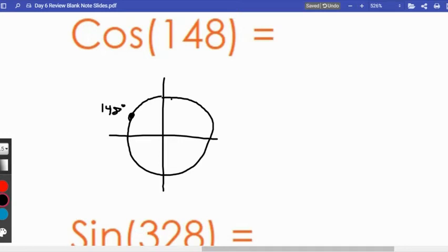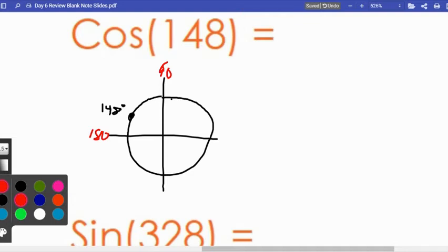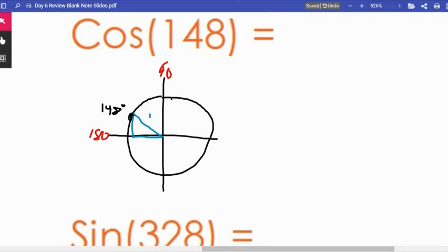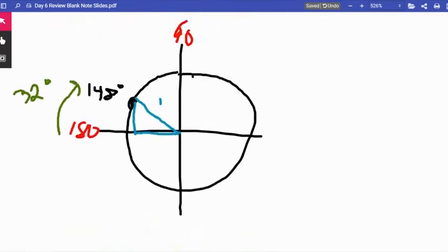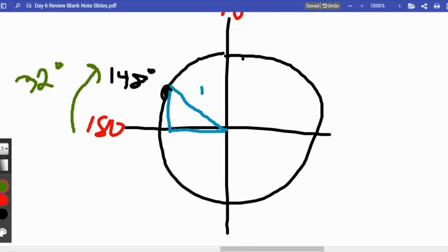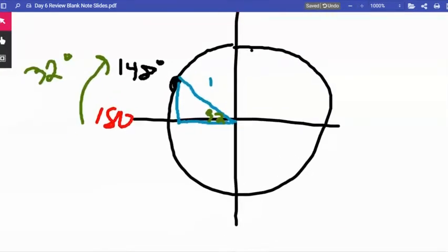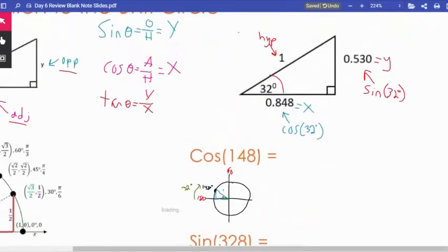148. If I were to plot that on the unit circle, it's going to be somewhere around here. It's not quite to 180. I'm using 180 as a reference and 90 as a reference. I know I'm somewhere in between those two values. It turns out that 148 is 32 degrees away from 180. 180 minus 32 is 148, so that angle was picked very specifically. That means this right here is 32.